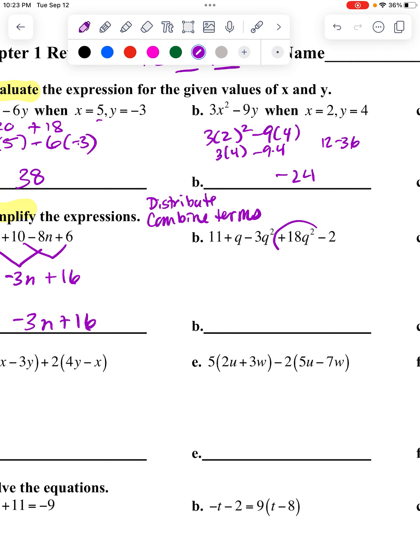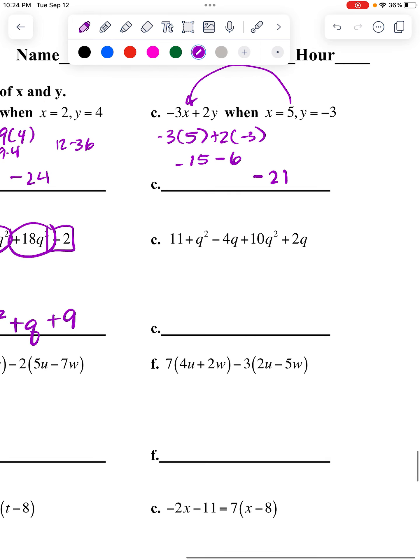Here I have some Q squareds. So I'm going to put those together first. 18 and a negative 3 will turn into 15 Q squareds. The only plain Q that I have is right here. I just have the 1 of those. And then I have an 11 and a minus 2, which turns into 9. Same thing here. I'm going to start with my Q squareds. So I have 10 of them here, one more here. So that's 11 Q squareds. I have a negative 4Q plus 2. So negative 4 plus 2 gives me negative 2Q. And then the only number I have is the 11, and there's nothing to combine with it. So I have plus 11.